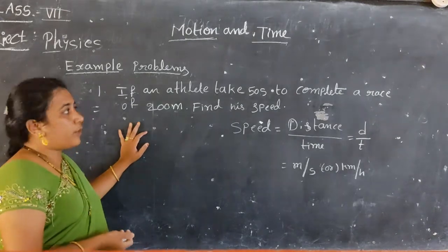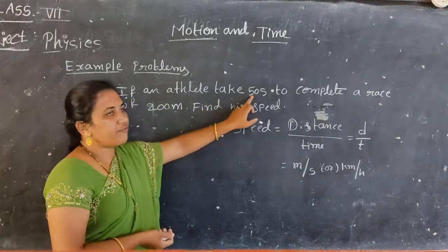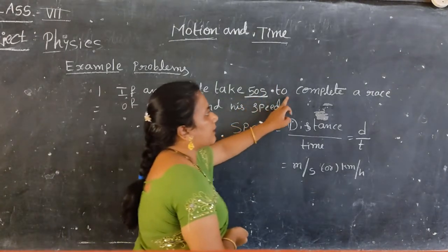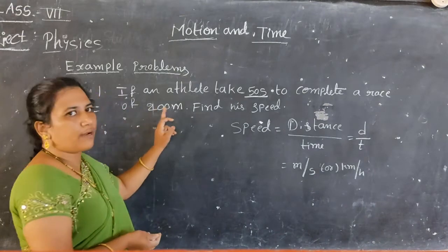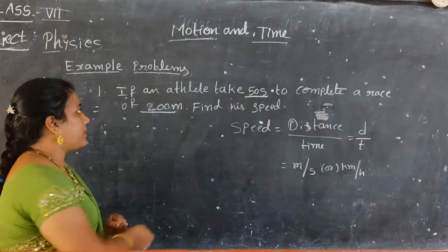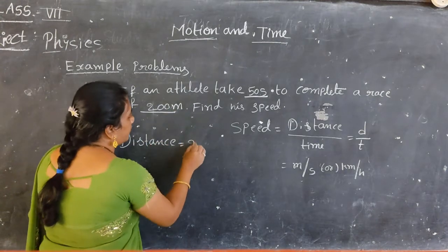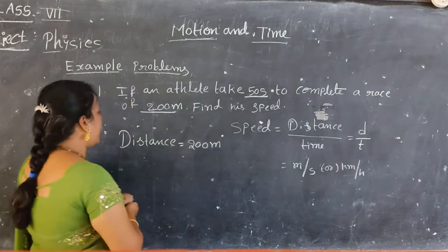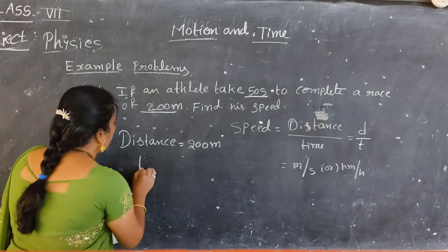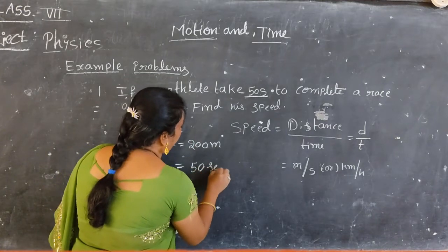Here I am going to explain a problem related to speed. If an athlete takes 50 seconds to complete a race of 200 meters. Time given here is 50 seconds.